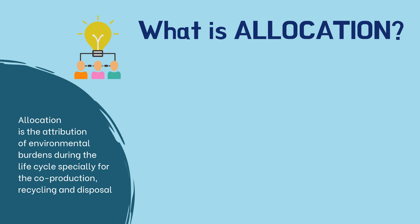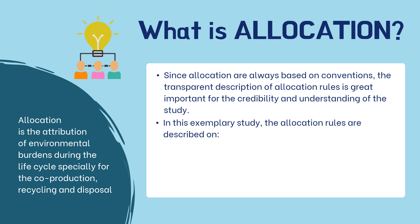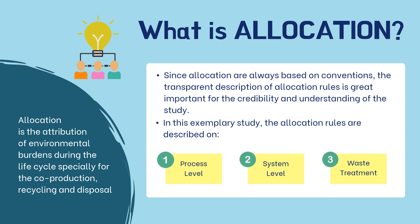Since allocation is always based on conventions, a transparent description of allocation rules is greatly important for the credibility and understanding of the study. Therefore, in this exemplary study, the allocation rules are described on three levels: the first is process level, the second is system level, and the last is waste treatment.